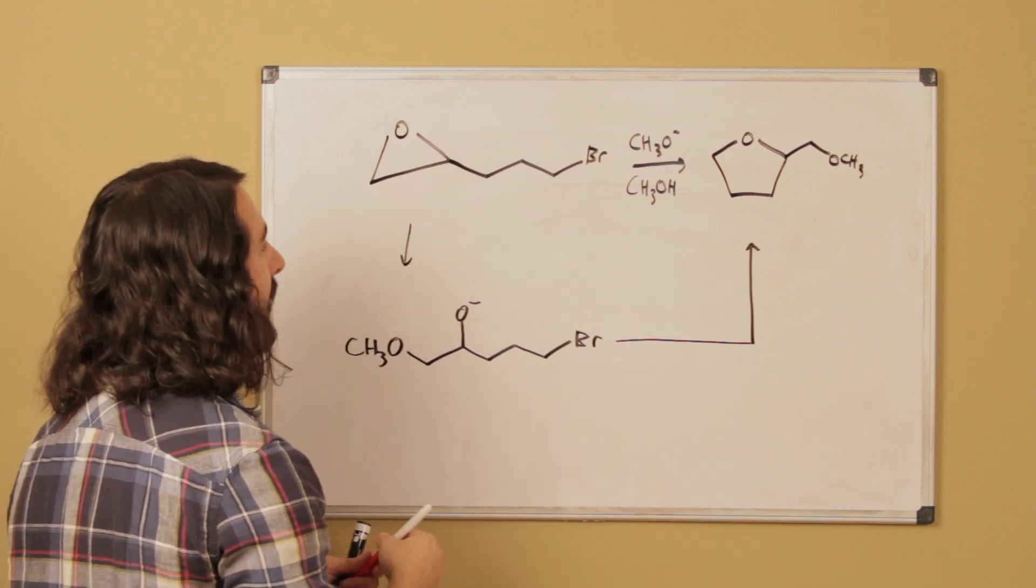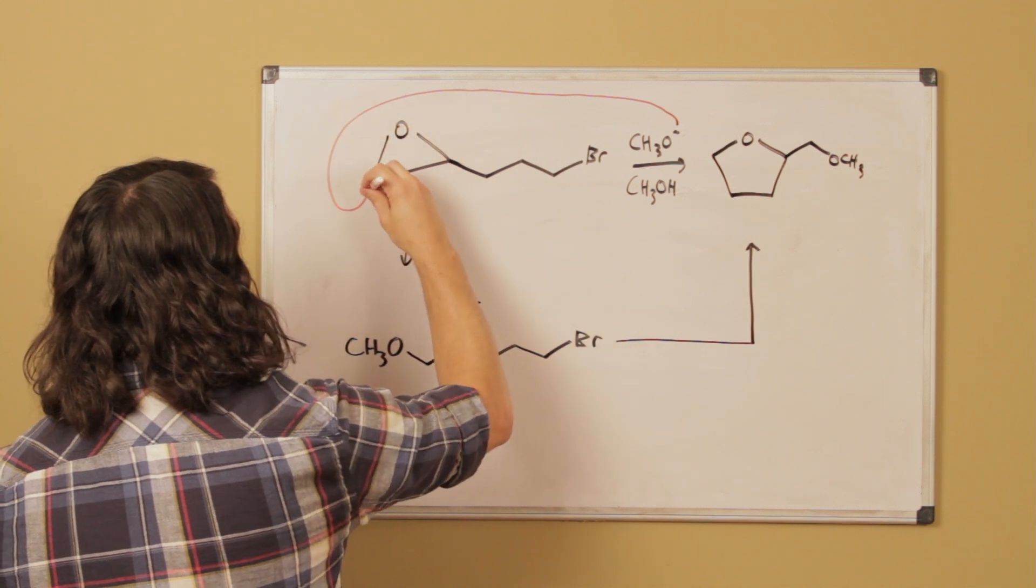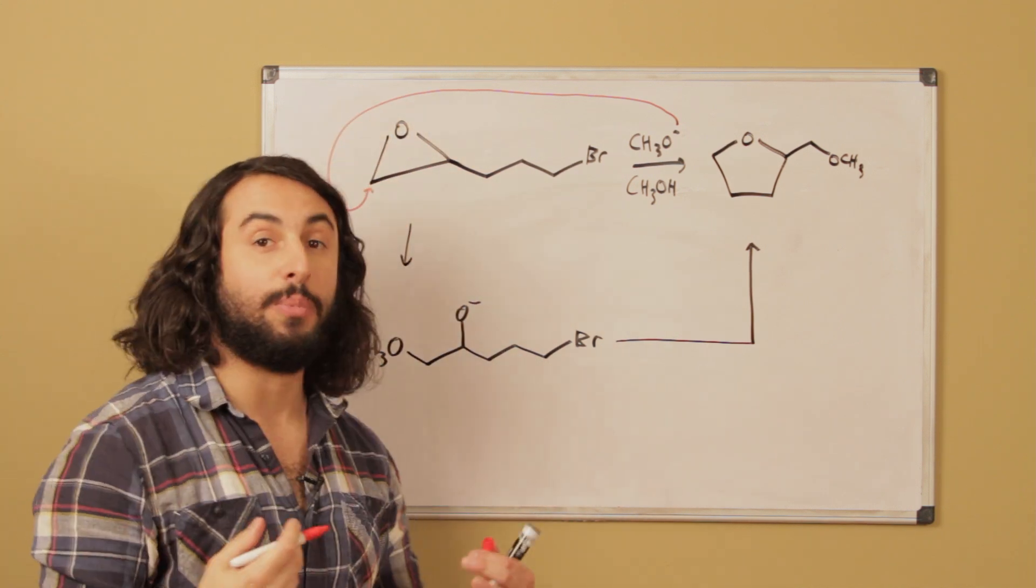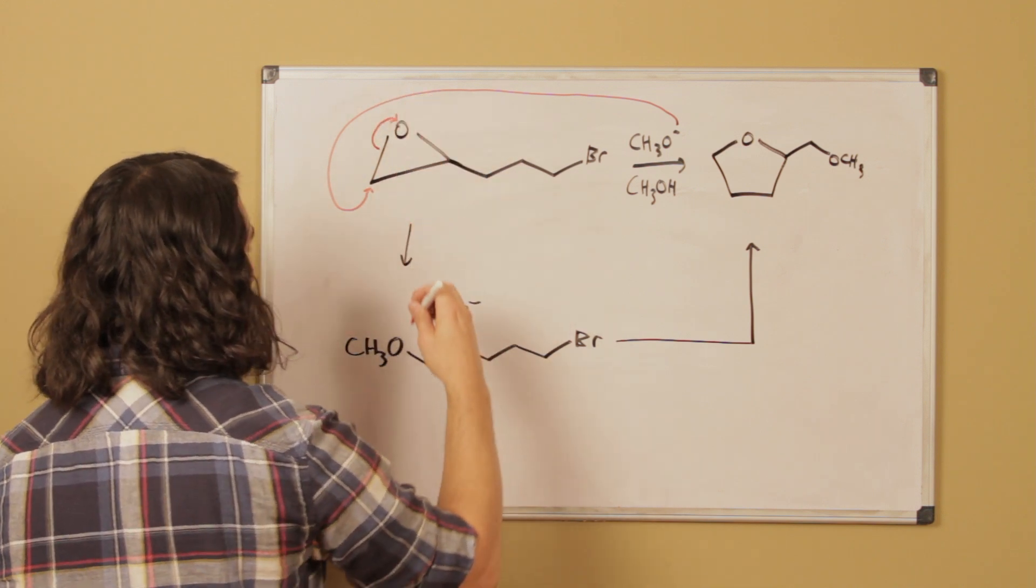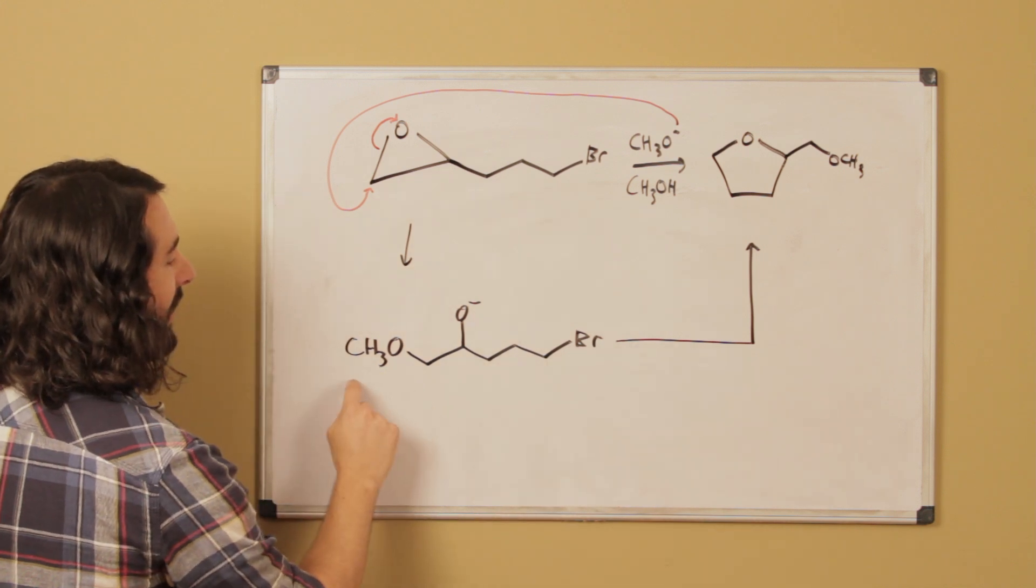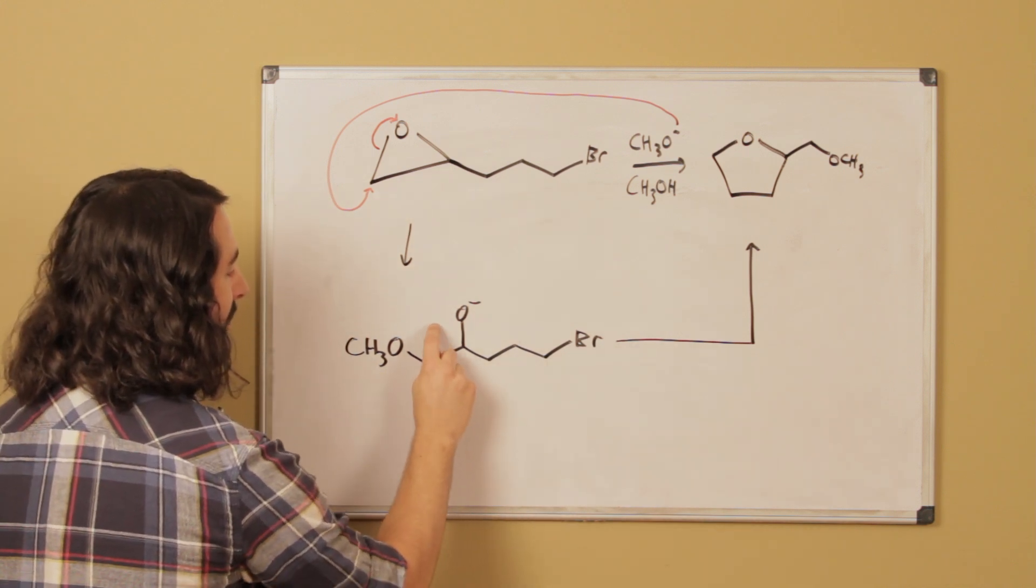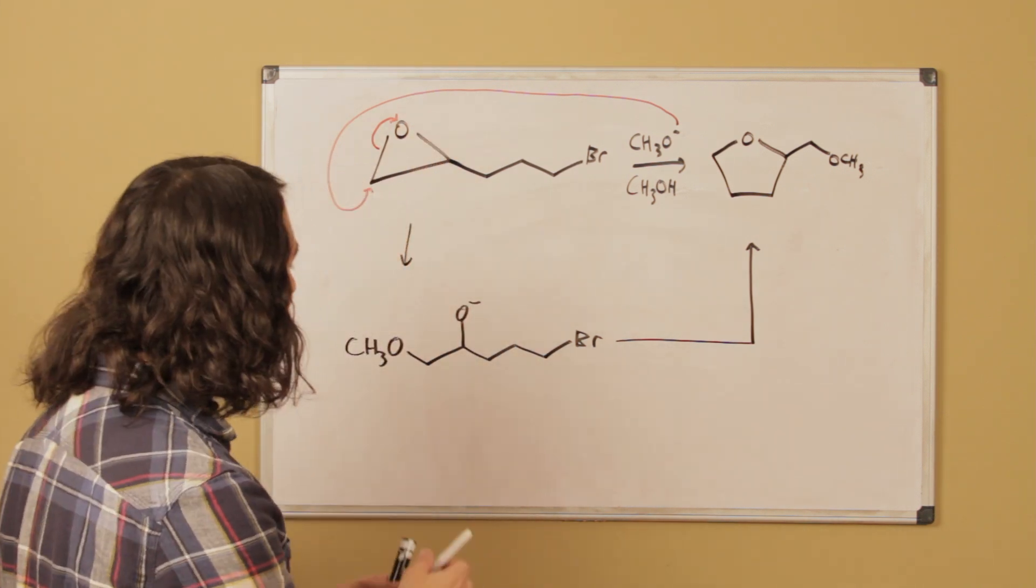Now sterics are going to dictate that it's going to go over here - it is the less sterically hindered side so it is more available for nucleophilic attack. If it attacks right there, it's going to pop open this epoxide. This is the methoxide that attacked. This used to be the epoxide here but now that's popped open so we have the oxyanion there.